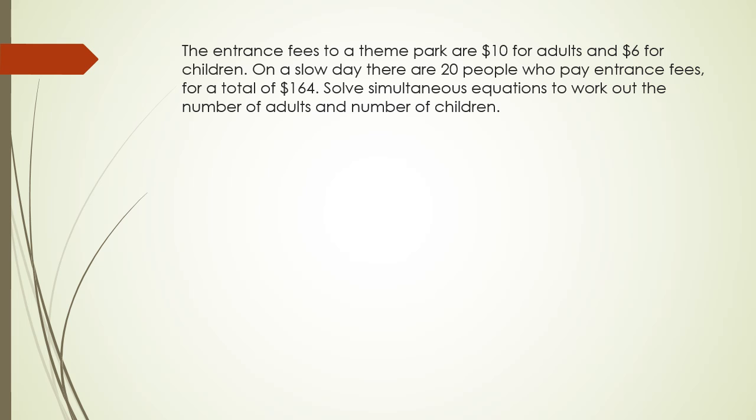This time I have the entrance fees to a theme park are $10 for adults and $6 for children. On a slow day, there are 20 people who pay entrance fees for a total of $164. And we're using simultaneous equations to work out the number of adults and number of children. So the first thing I'm going to do is I'm actually going to call my two variables. So a is going to be for adults, and then c is going to be for children.